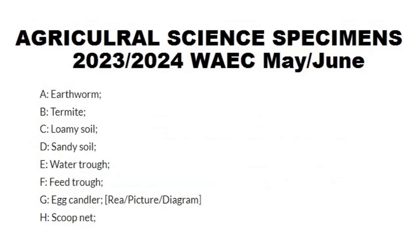Specimen A is earthworm. Specimen B is termite. Specimen C is loamy soil. Specimen D is sandy soil. Specimen E is water drawer — water drawer is that item that looks like a container where you put water and use it to serve chickens.